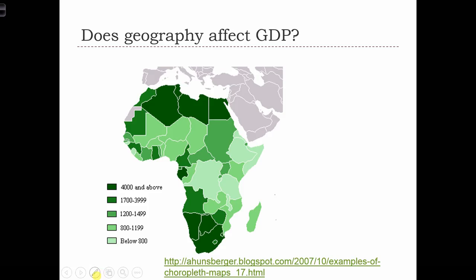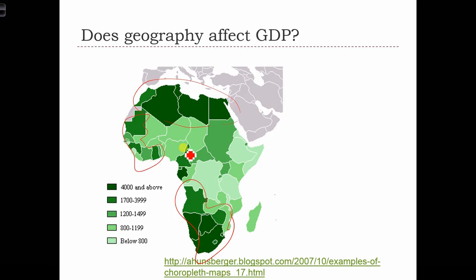To my eye, I definitely see some clustering. I see high values of GDP over here in these countries across the north, I see high values down here in the south, and then there's some pockets over here of not quite as strong, but definitely some mixture between high and low, and then we see big swaths of land that are predominantly low values of GDP.